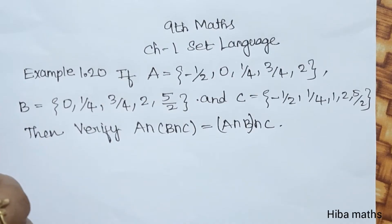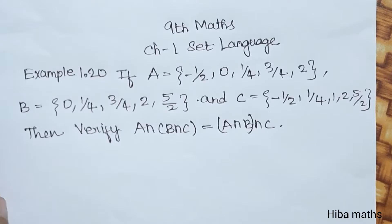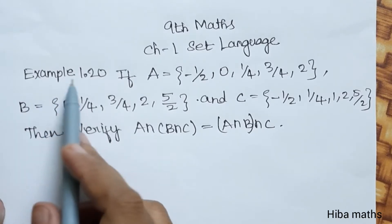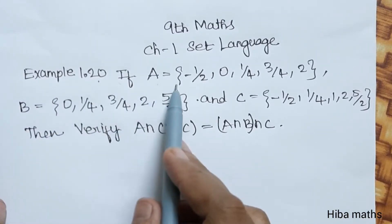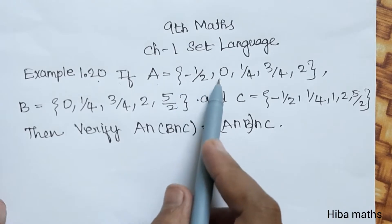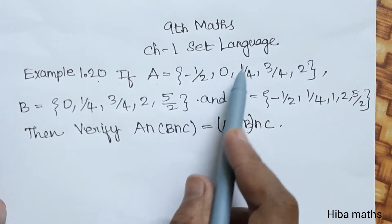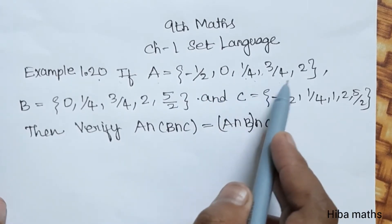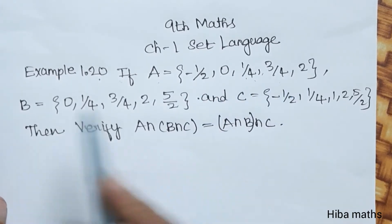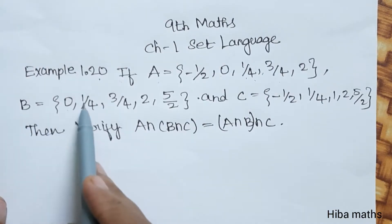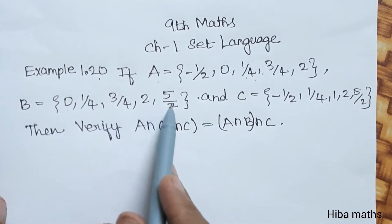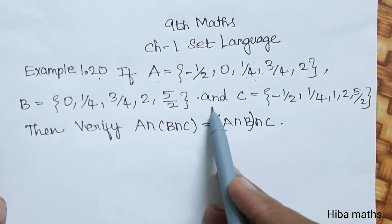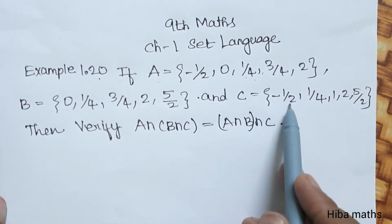Hello students, welcome to Hibamax 9th Standard Max Chapter 1 Set Language Example 1.20. If A is equal to {-1/2, 0, 1/4, 3/4, 2}, B is equal to {0, 1/4, 3/4, 2, 5/2}, and C is equal to {-1/2, 1/4, 1, 2, 5/2}.